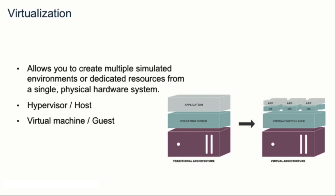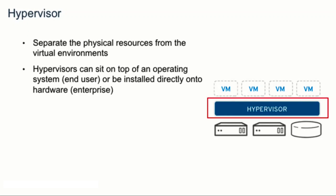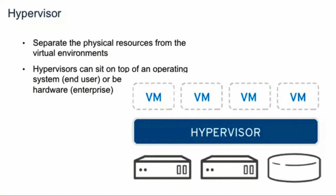The hypervisor is the software or application that runs on the actual hardware and allows you to virtualize operating systems. Then you have the virtual machines, also called the guest machine — basically anything that you virtualize on top of the hypervisor or the virtualization layer. The hypervisor separates the physical resources from the virtual environment, meaning the virtual machines do not have direct access to the hardware itself. The hypervisor can sit on top of the operating system — for example, you could install VirtualBox or VMware — or it can be installed directly on hardware, also called enterprise mode, such as VMware ESX.